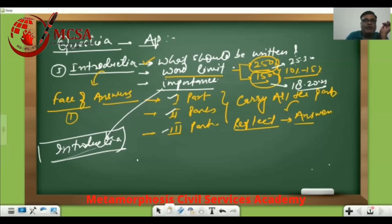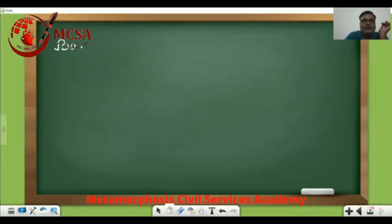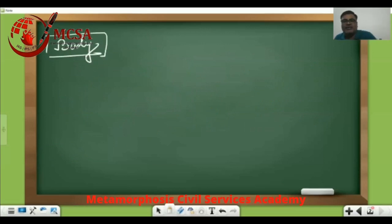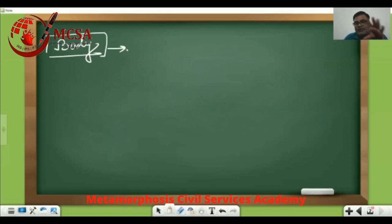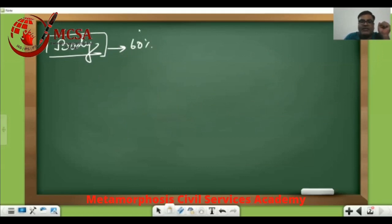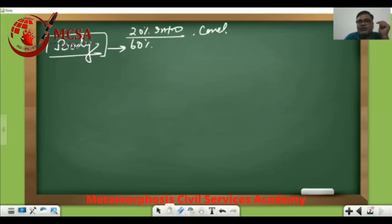Now, point number two: the second part is called the body, and this is actually the heart of the answer. The word limit for the body part is around 60%. Remember, 20% you have already given to the introduction, and around 20% will go to the conclusion. So keep 60% of the word limit for the body, depending on whether the question is 150 words or 250 words.